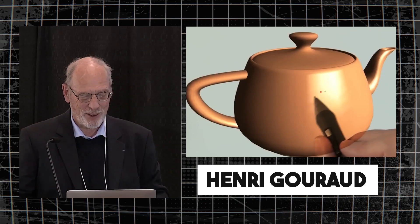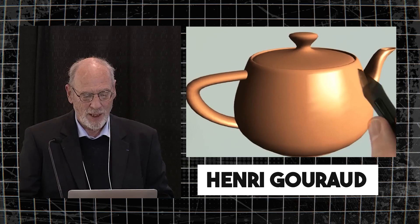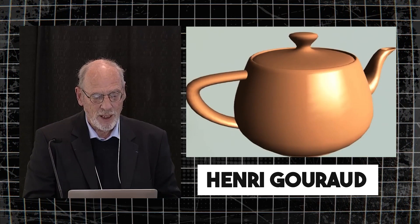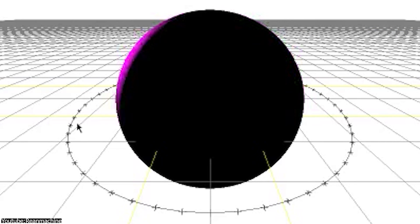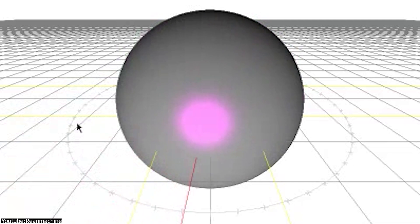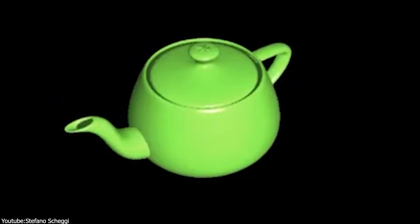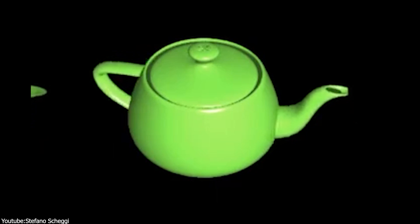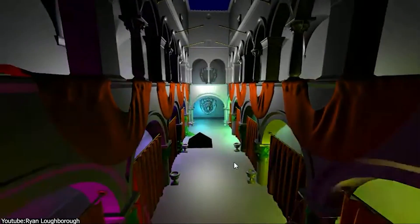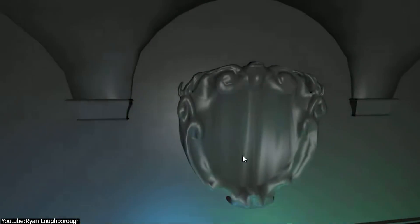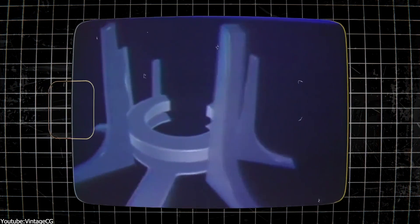The 70s also saw the development of basic shading techniques such as Gouraud shading and Phong shading. Gouraud shading, introduced by Henry Gouraud, was one of the first methods to simulate smooth surfaces by interpolating vertex colors across polygons. Phong shading improved upon this by interpolating surface normals instead of colors, resulting in more realistic highlights and better representations of shiny surfaces. The 70s also saw early experimentation in keyframe animation, where specific keyframes are defined and the computer generates the in-between frames — a method that remains a fundamental technique in animation even today.